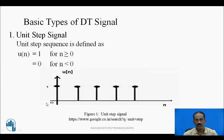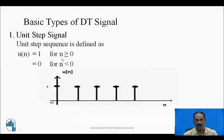Along the x-axis is n, and the corresponding u(n) is plotted. For different values of n, the corresponding value of u(n) is shown. At n = 0, u(n) = 1; at n = 1, also 1. This continues as n varies from 0 to +infinity, where all values are 1. On the negative side, since n < 0, the value is 0, so no signal is present there.